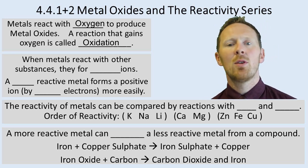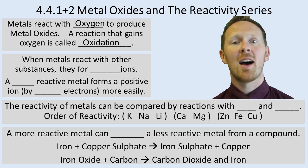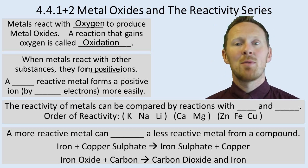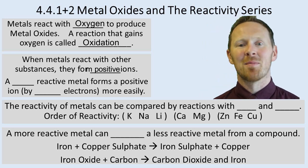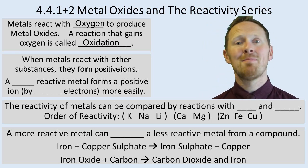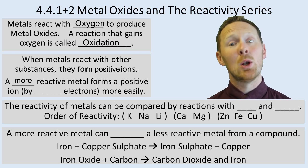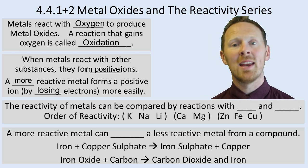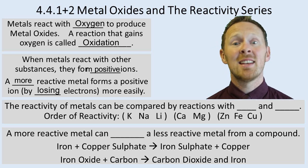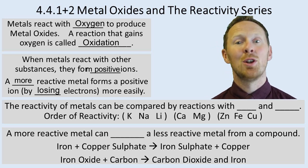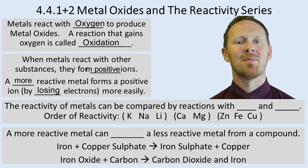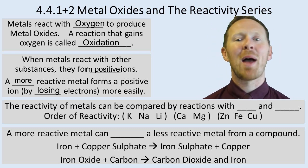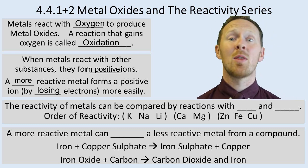When metals react with other substances, they form positive ions. So when a metal reacts with oxygen, it becomes a positive ion and forms an ionic compound. How does this relate to reactivity? A more reactive metal forms a positive ion by losing electrons more easily. Reactivity is linked to the ability of an atom to lose electrons — the easier it loses electrons, the more reactive the metal is.